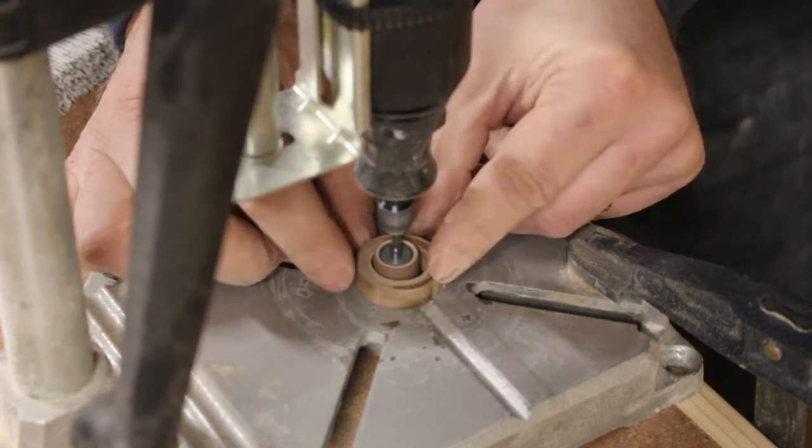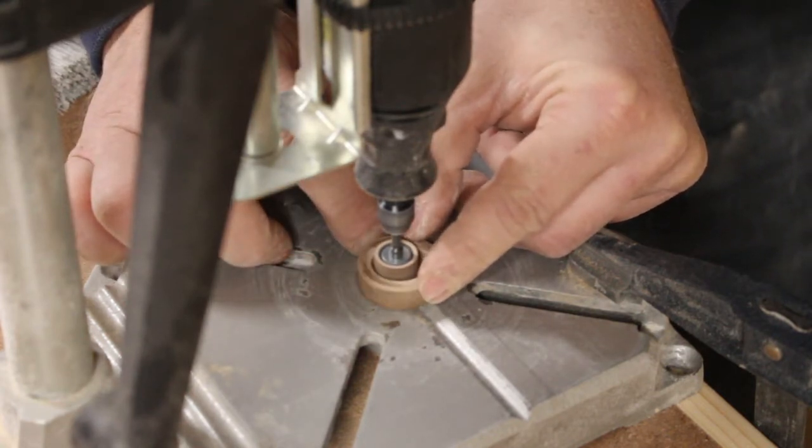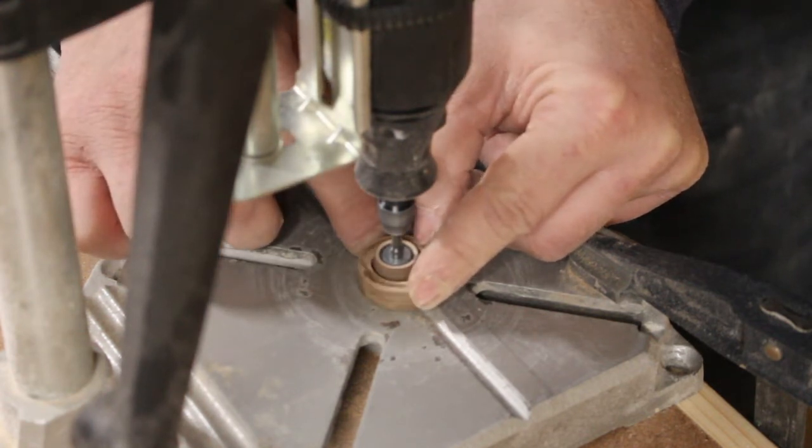Next I placed my multi-tool into a portable craft drill press that I've got and used a small sanding drum to touch up the inside surfaces of the rings. After that, I used the same drum to sand the outside surface.